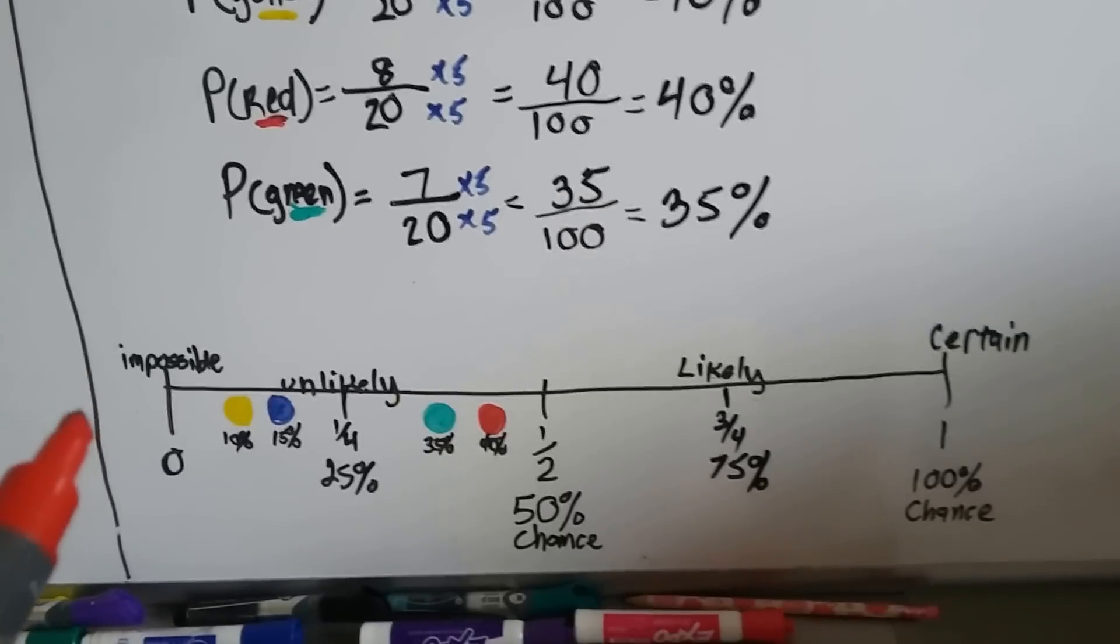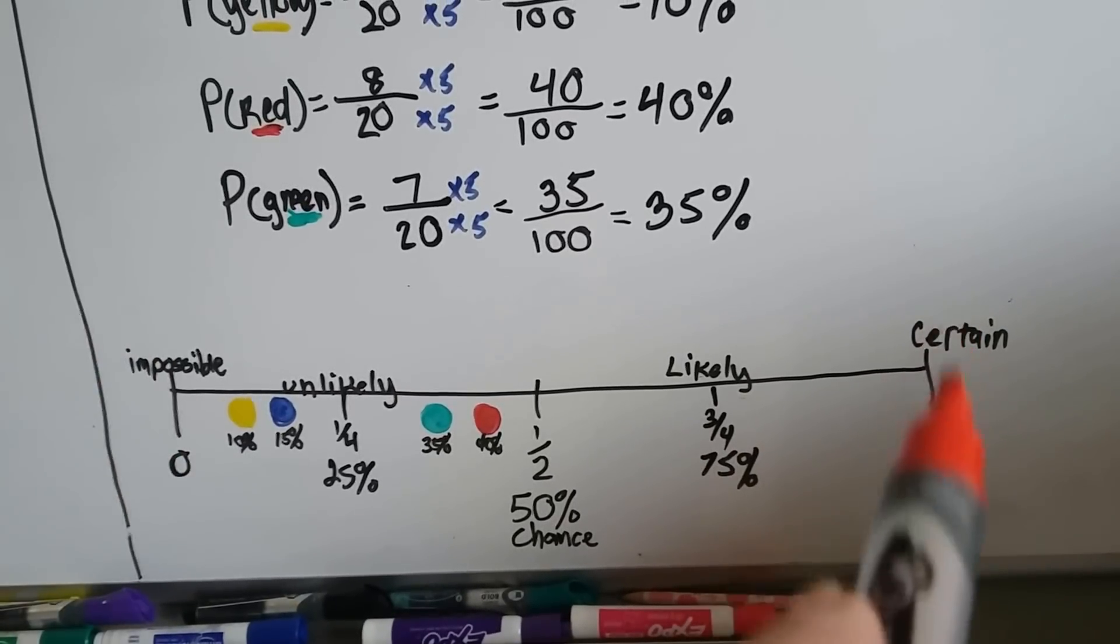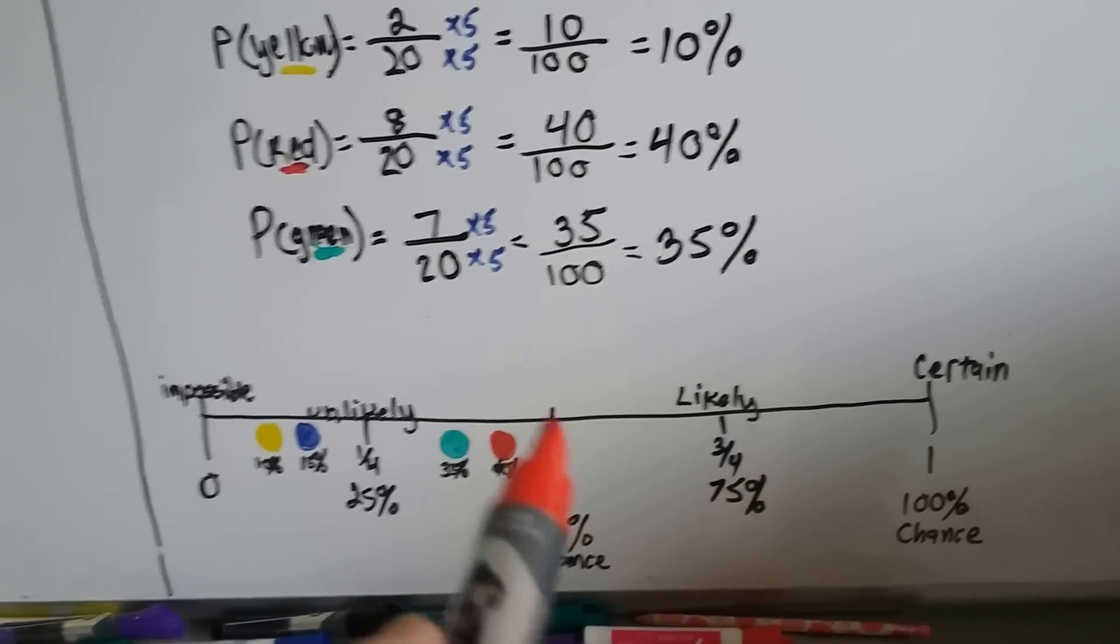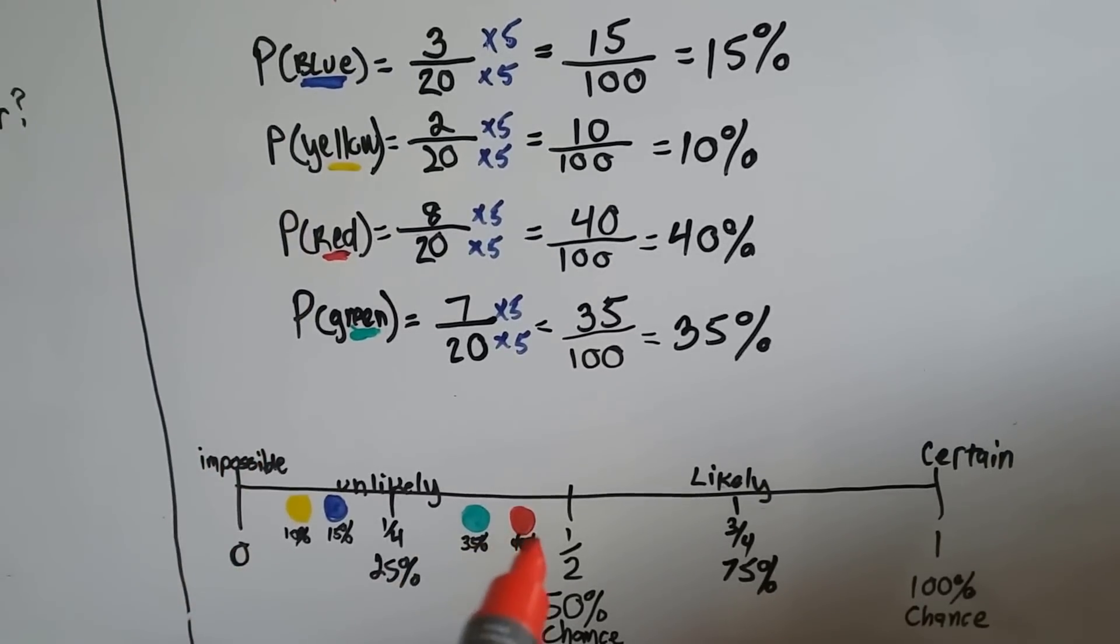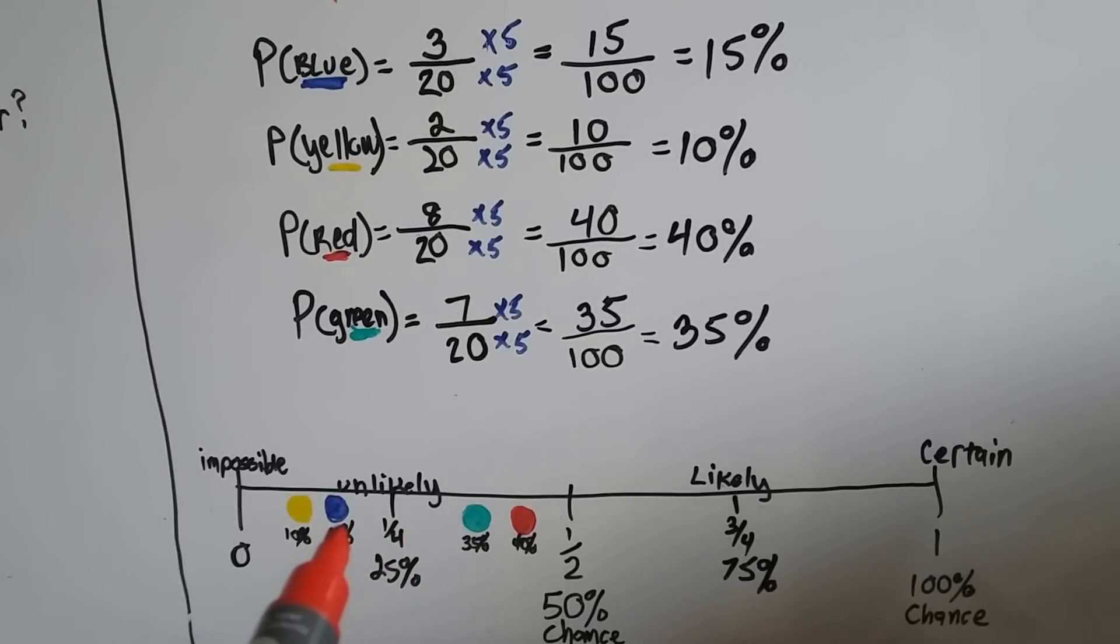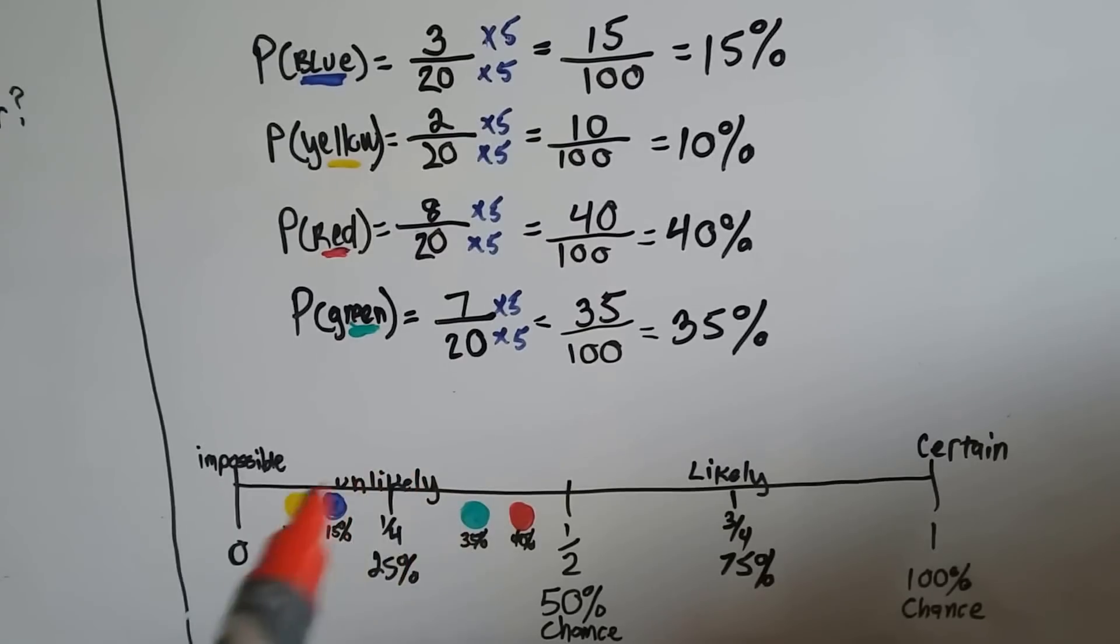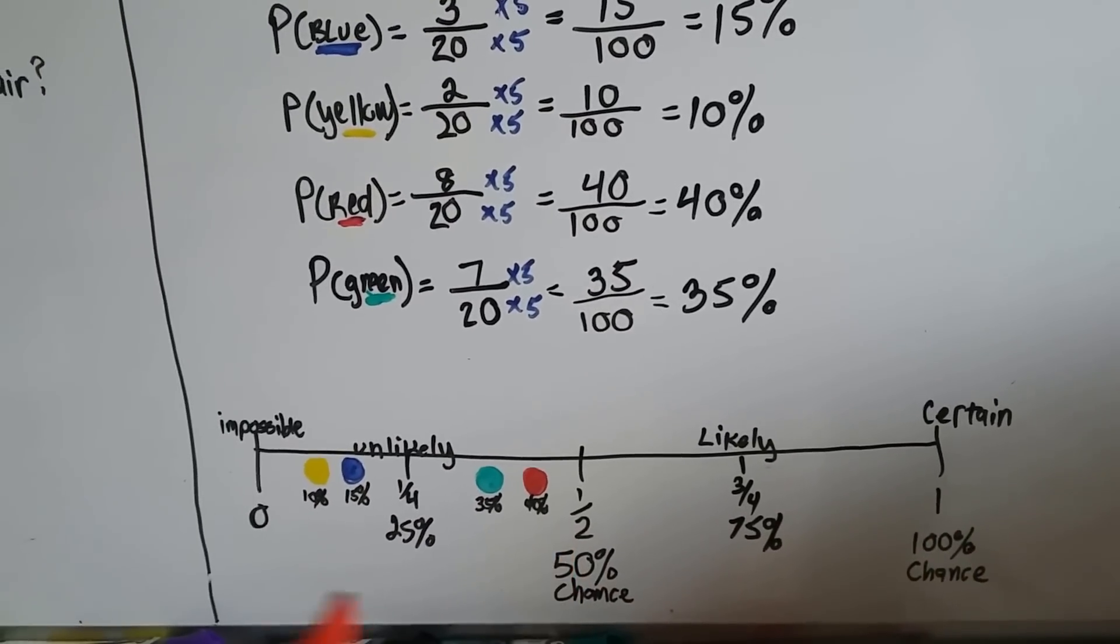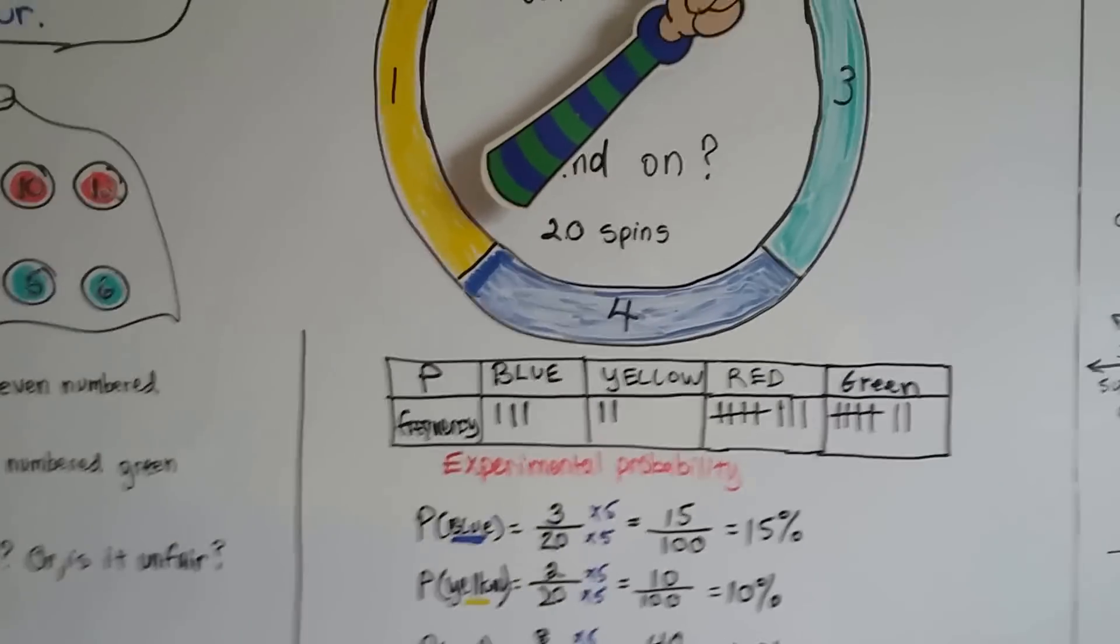So on a number line of certainty here, the side over here is impossible, and that's zero, and completely certain that it's going to happen is a one. The halfway mark is a 50-50 chance. So here's where they landed. Red, 40. Green, 35. Blue, 15. Yellow, 10. So it was saying it's more likely that it would land on red than yellow. This would be 100% happening, and this would be 50%, and this would be not happening at all. That's all well for experimental probability and actually spinning it and keeping the tally marks and doing the math and everything.